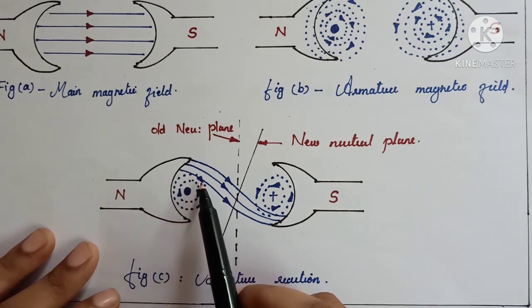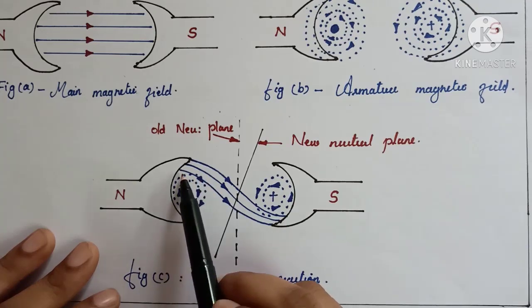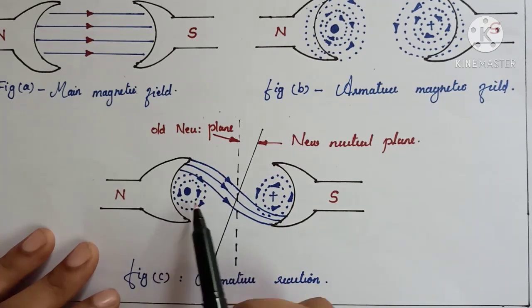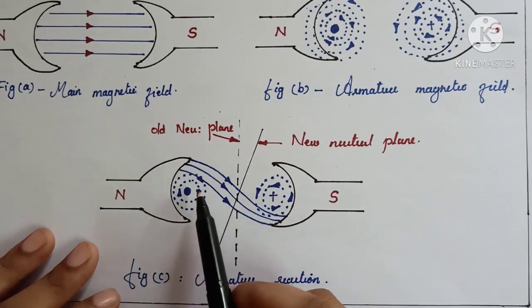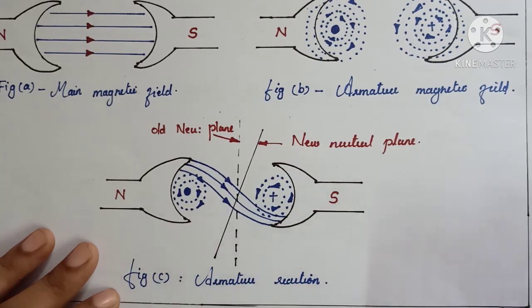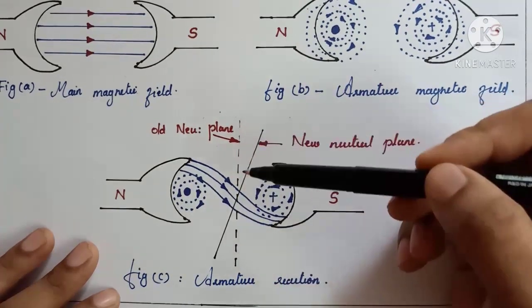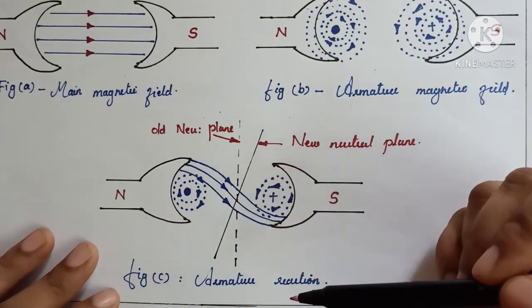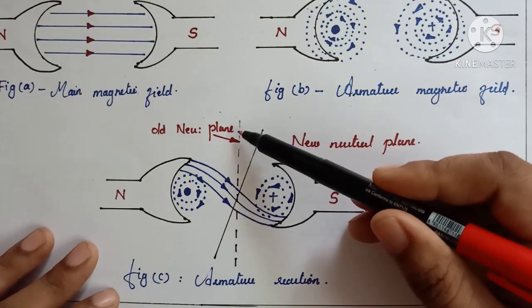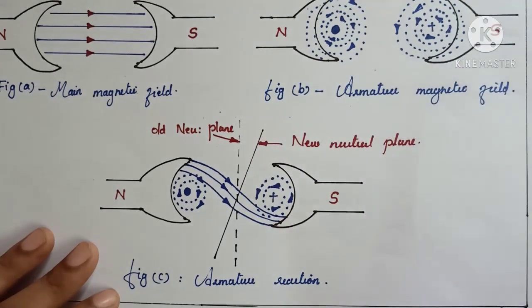If you observe the arrows, you can easily understand that at some points the armature magnetic field is aiding the main field, and at other points it is opposing it. The main field moves in one direction while the armature field rotates, so they move opposite at some portions and cross at others. As a result, the old magnetic neutral axis shifts to a new position — the magnetic neutral axis is shifted due to the armature reaction loading effect.